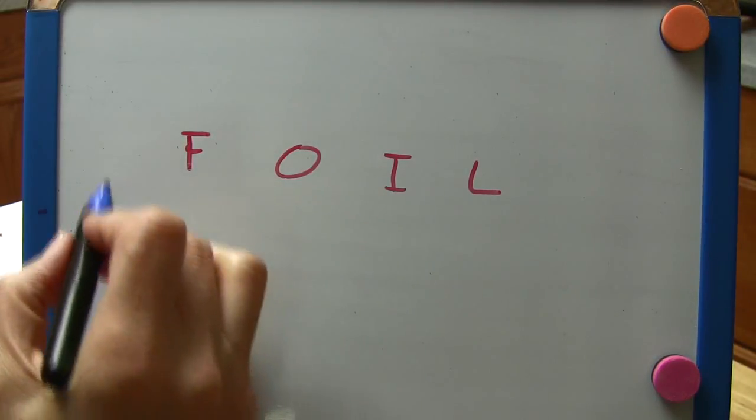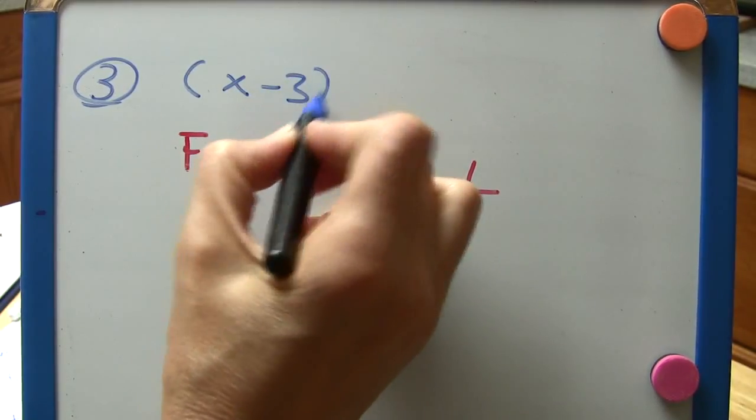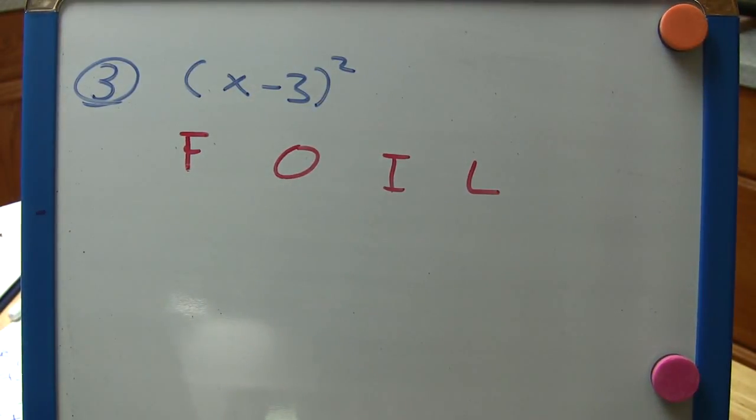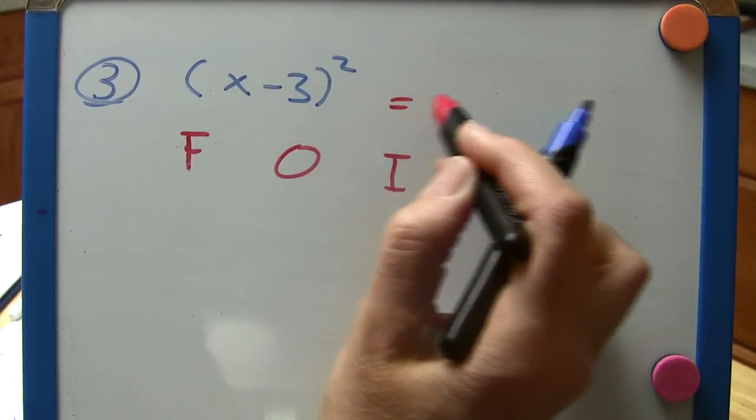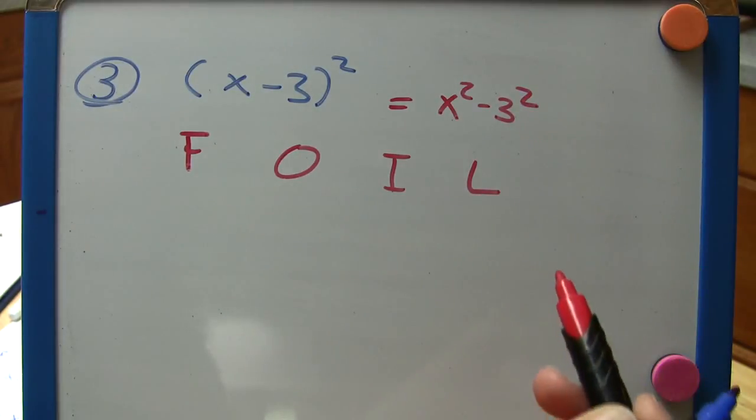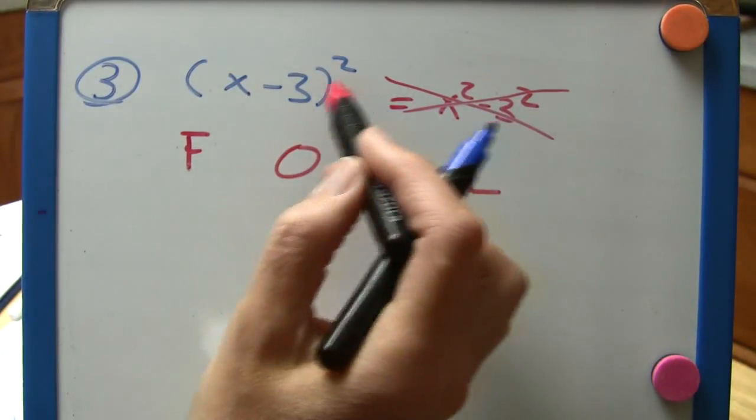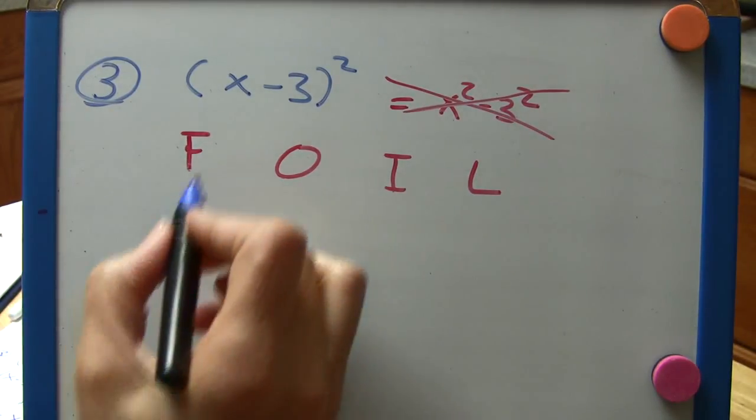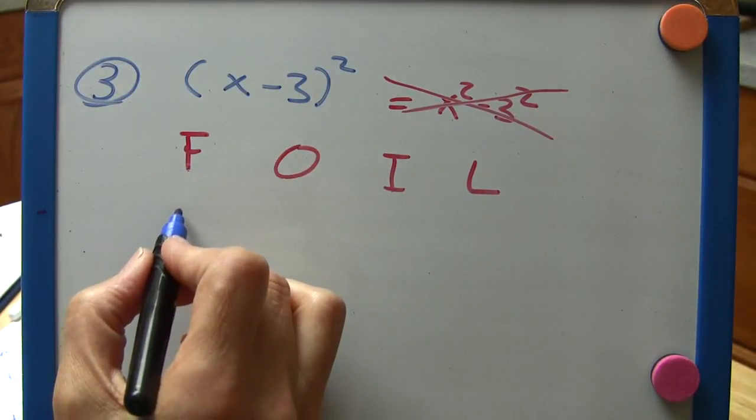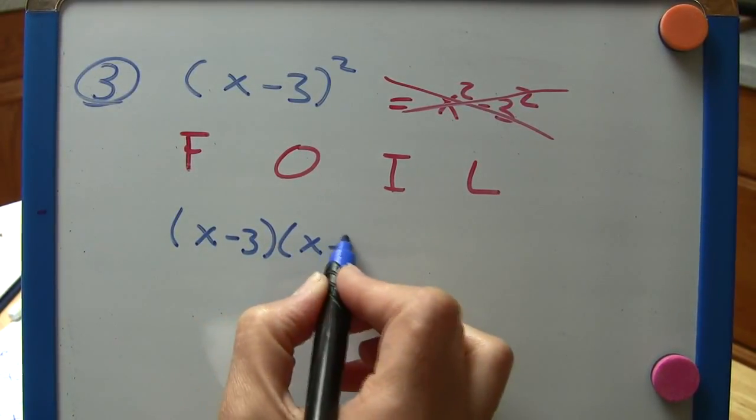For a third example, let's say we have x minus 3 quantity squared. A lot of students are tempted to say that's x squared minus 3 squared. Please don't say that. Please don't do that. You cannot just distribute this exponent over the terms. What this means is x minus 3 times x minus 3.